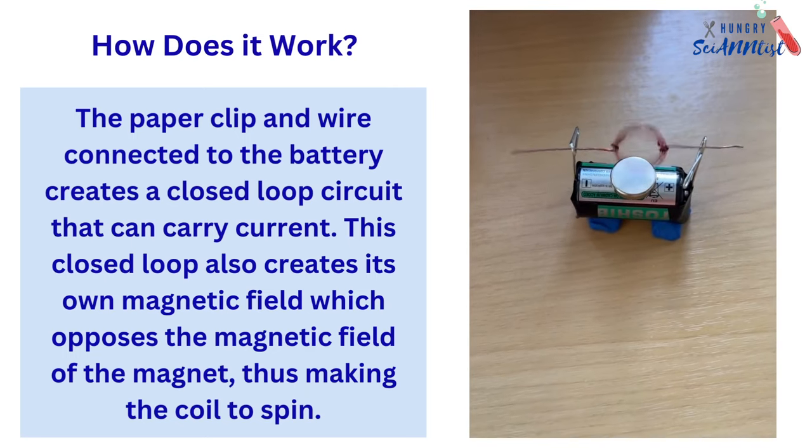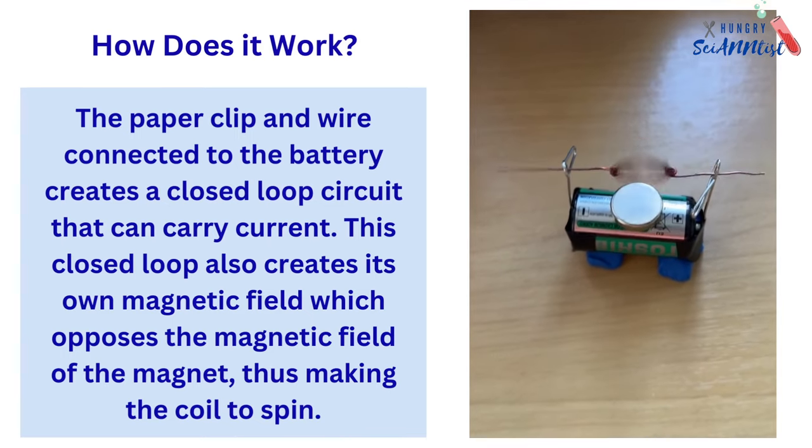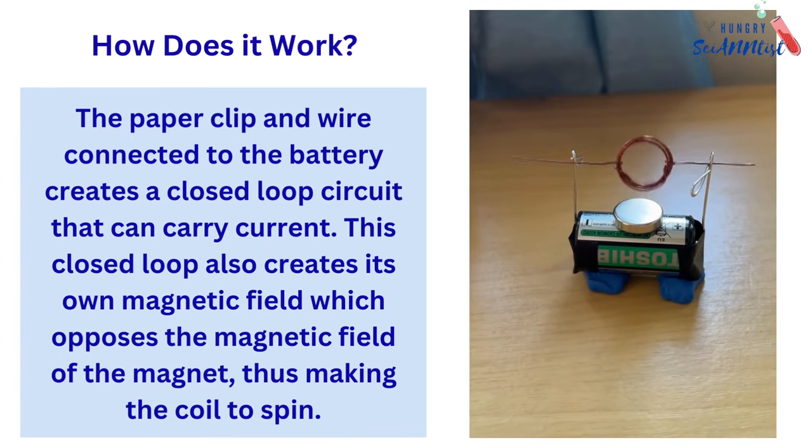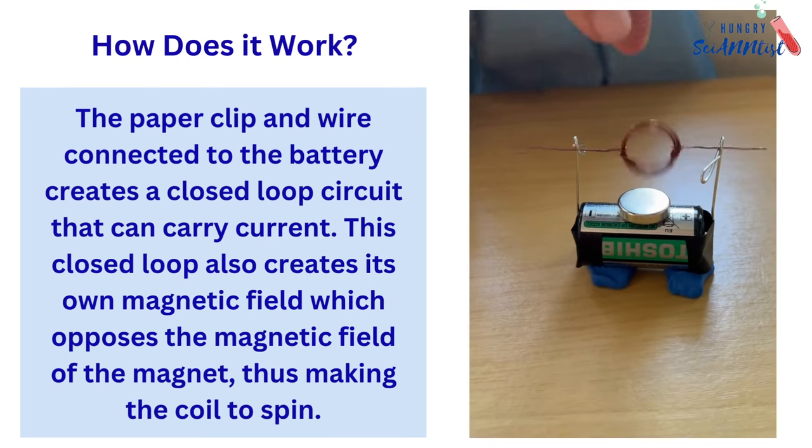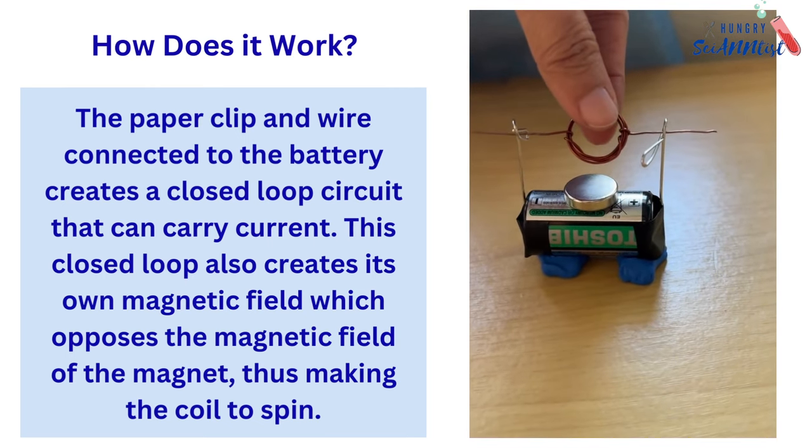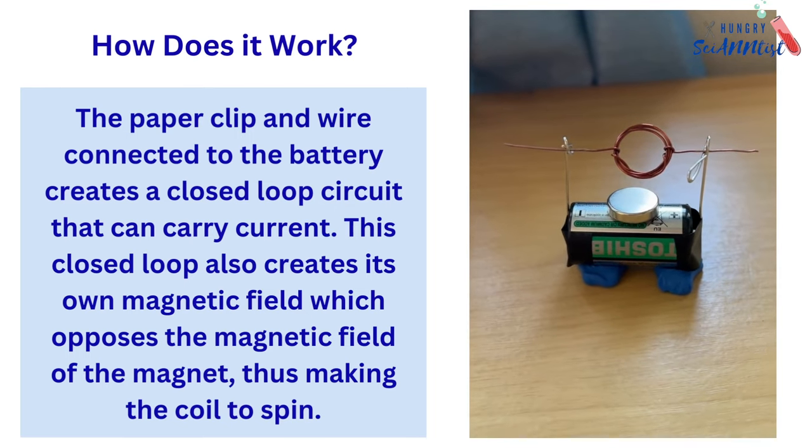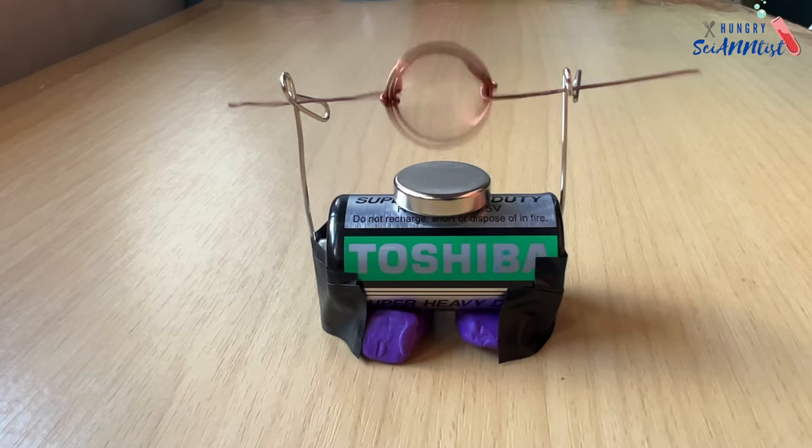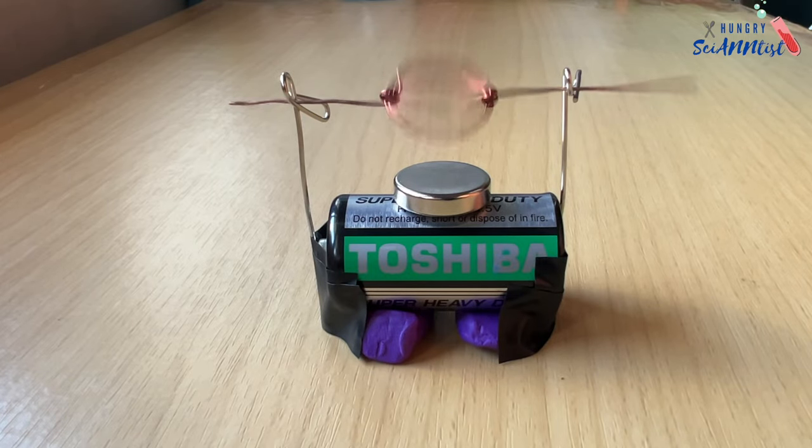How does it work? The paper clip and wire connected to the battery creates a closed-loop circuit that can carry current. This closed loop also creates its own magnetic field, which opposes the magnetic field of the magnet, thus making the coil to spin.